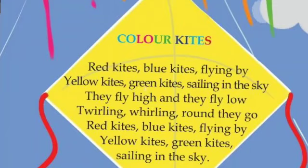Some fly high and some fly low — tillering, willering, round they go — taking many turns, going here and there, flying in the sky. Red kites, blue kites flying by, yellow kites, green kites sailing in the sky. It's such a beautiful poem! Now let's look at the activities.